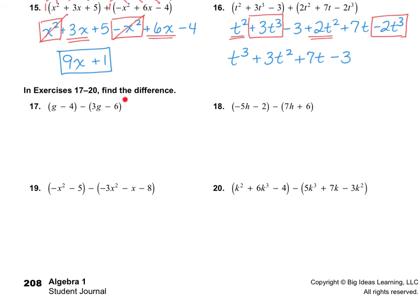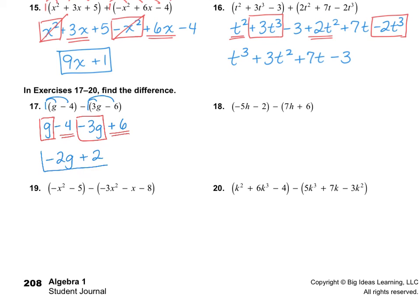Lastly, we need to find the difference. When we multiply in our ones, the first parentheses stays the same — g minus 4 — but in the second, negative one times 3g gives minus 3g, and negative one times negative 6 turns into positive 6. You have to double check that you distributed the negative correctly. Then combine like terms: g and negative 3g give negative 2g, and negative 4 plus positive 6 gives positive 2. So the answer for number 17 is negative 2g plus 2.